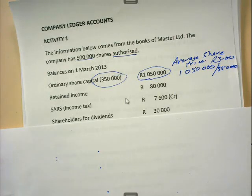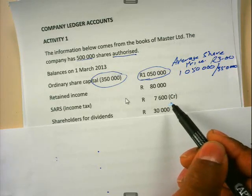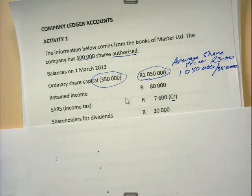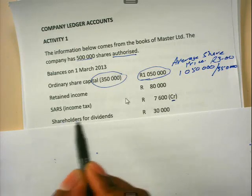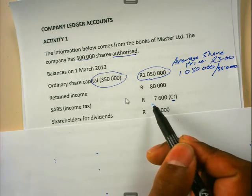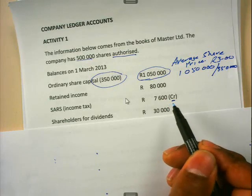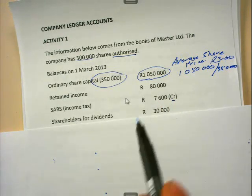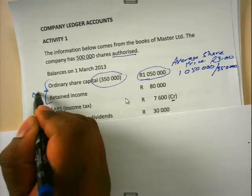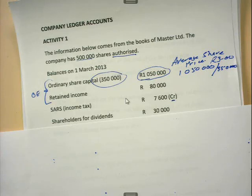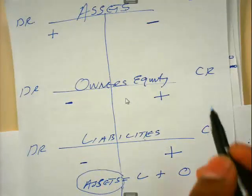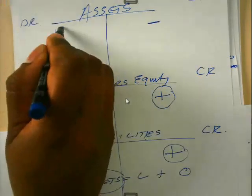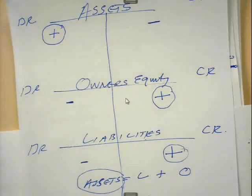One may ask: why with the SARS account do they indicate that it has a credit balance, whereas with the other three accounts they do not tell us? The reason is quite simple — this account can have either a debit or a credit balance. Therefore in each and every question you will get an indication whether it has a credit balance or a debit balance. The others — ordinary share capital and retained income — are owner's equity accounts and therefore have credit balances, because owner's equity accounts increase on the credit side. Whereas assets increase on the debit side and will therefore have debit balances.